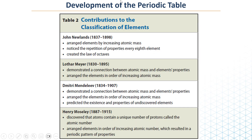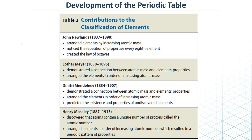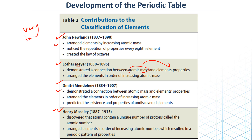So this is the development of the periodic table and the contributions of the scientists: John Newlands, Lothar Mayer, Dmitri Mendeleev, and Henry Moseley. Lothar Mayer demonstrated the connection between atomic mass and element properties. The most important contributors are Newlands, Mendeleev, and Henry Moseley. This summary table is very important because exam questions come from it — you need to know the contribution of each scientist.